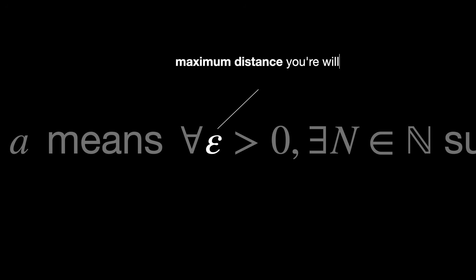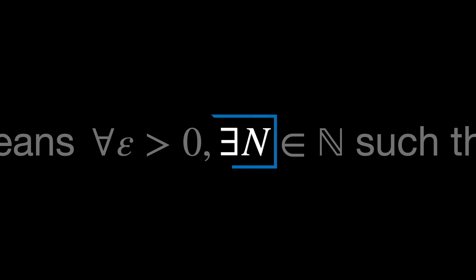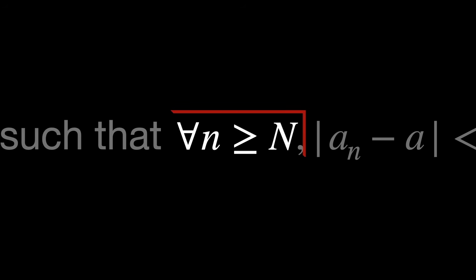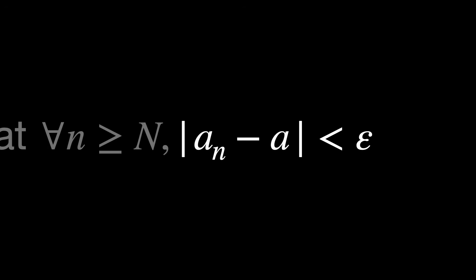We choose a small number epsilon, which is positive. Think of this as the maximum distance you are willing to tolerate from the limit a. There exists a point in the sequence, call it position n, after which all terms are close to a. Once you go past that n, all future terms of the sequence stay close to a. Close to a here means the distance between a sub n and a is less than epsilon.